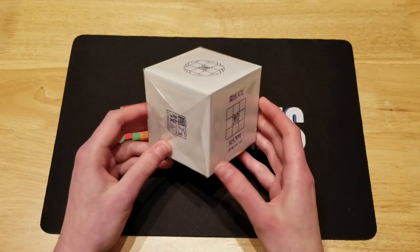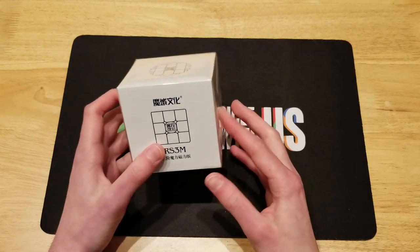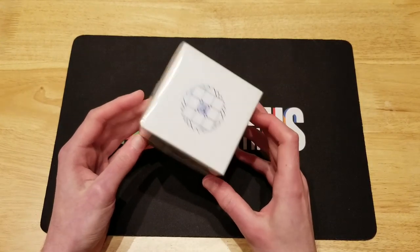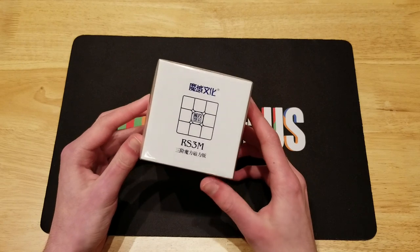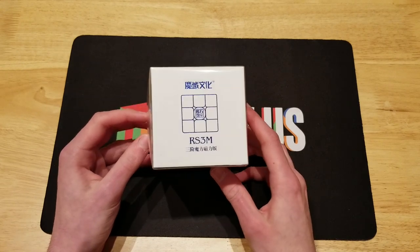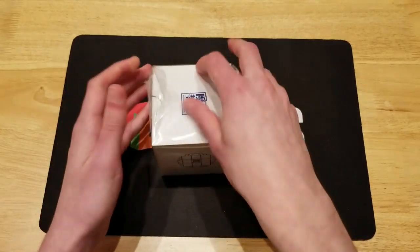So here is the cube. One interesting thing about this puzzle is that it's marketed as the RS3M, so they cut out the MF. Let's get right into it.